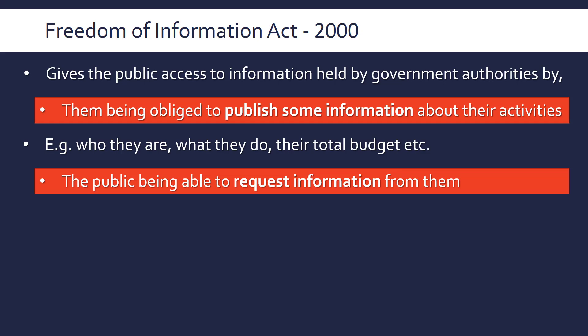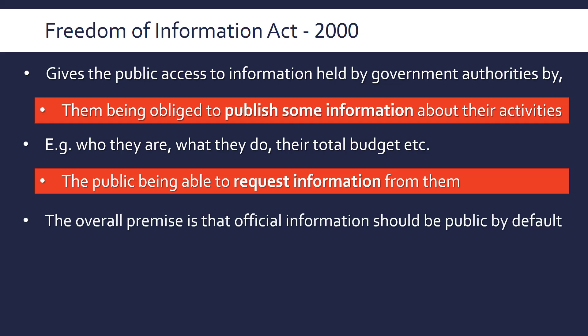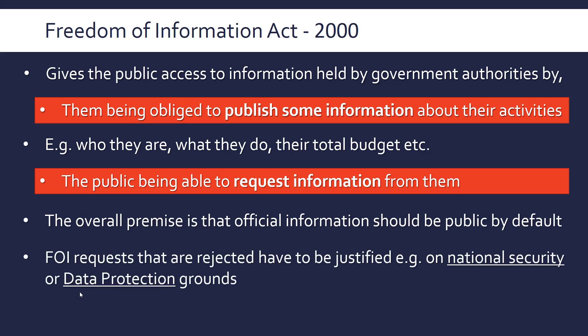Also, the public should be able to request information from them. The general idea is that official information, in order for the government to be held accountable and for us to feel that the government is acting in our best interests, should be public by default unless there's a good reason for it to be secret. Requests which are rejected have to be justified by the department — they can't just say no, they've got to give a reason, often on national security or data protection grounds. For example, they can't give details about overseas operations, or give information about individuals unless it's very much in the public interest.